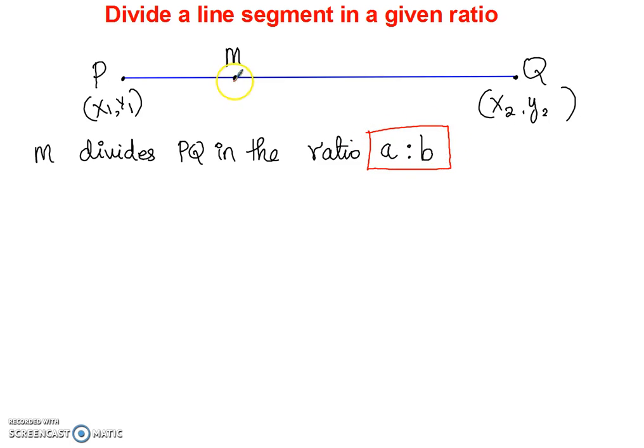Then how do you find the coordinates of this new point M? That's the question. So A is to B. You are dividing this line segment into A is to B parts. How do you find the X coordinate? How do you find the Y coordinate of this point M?